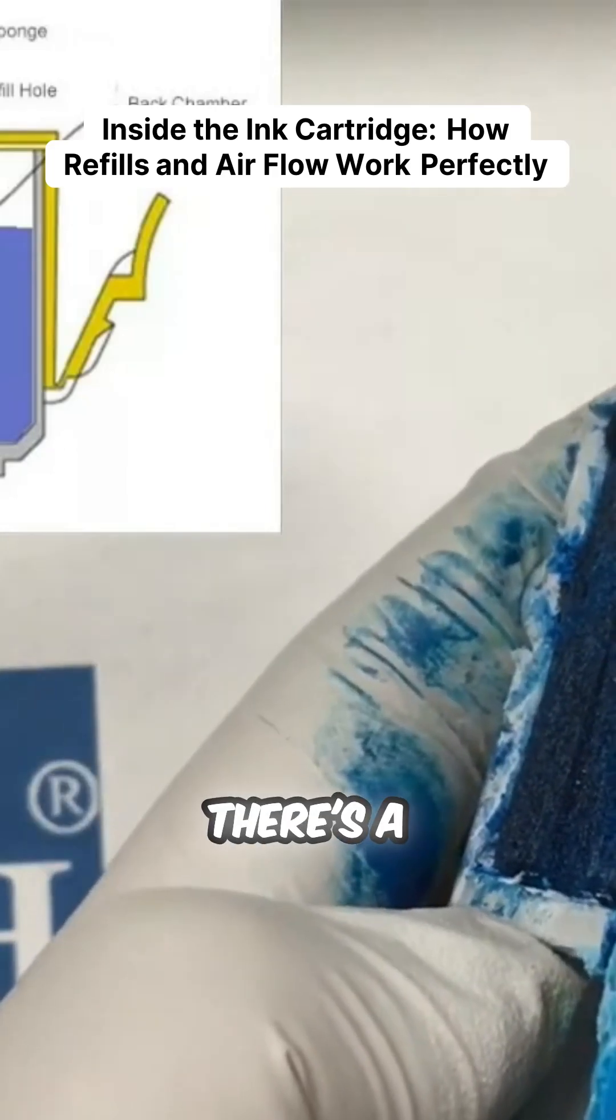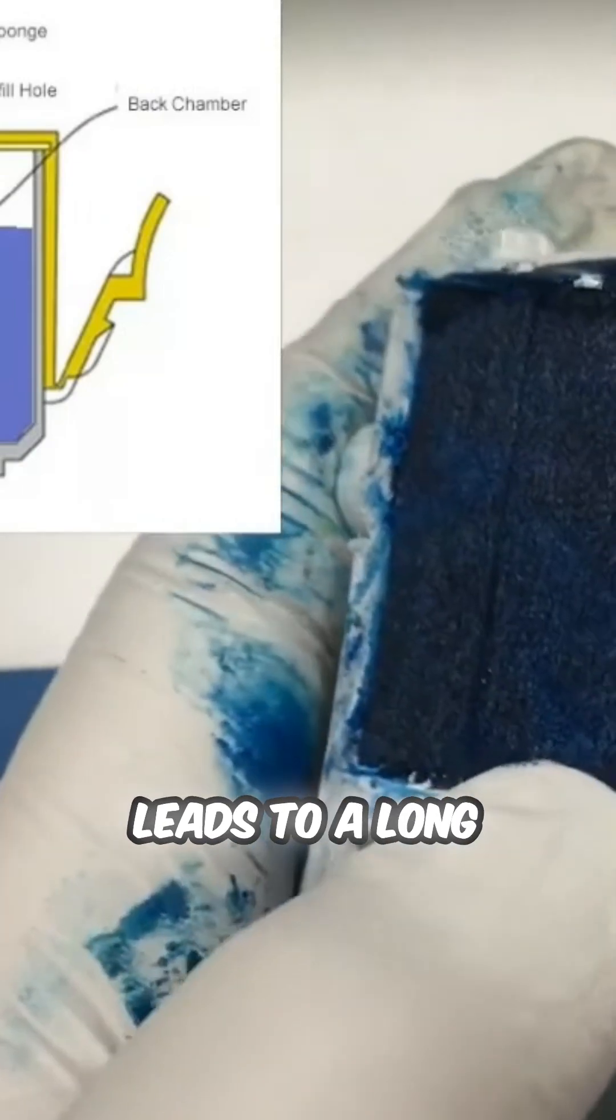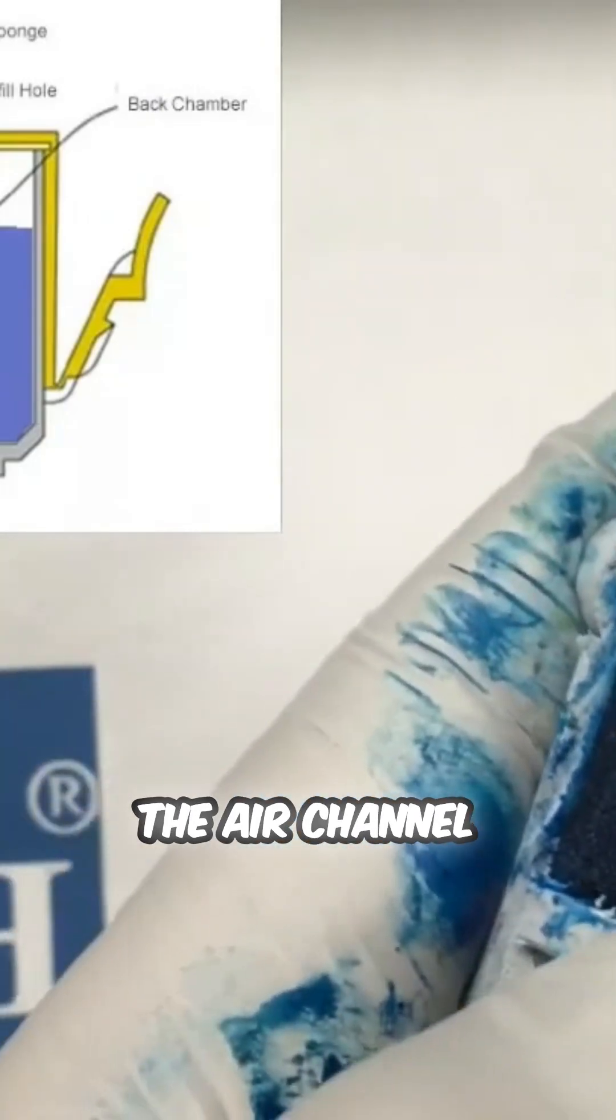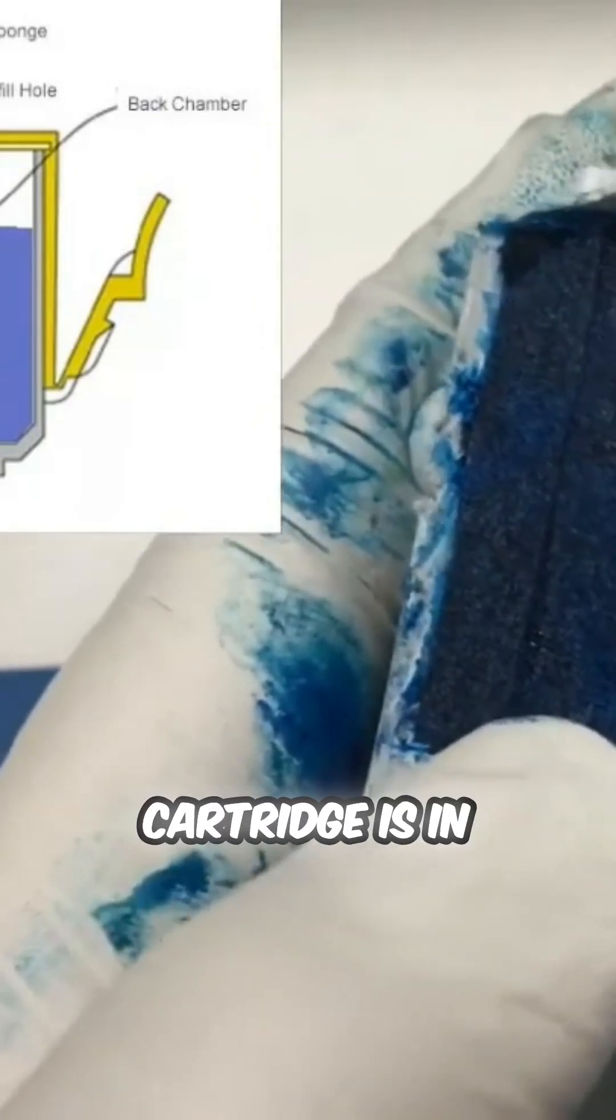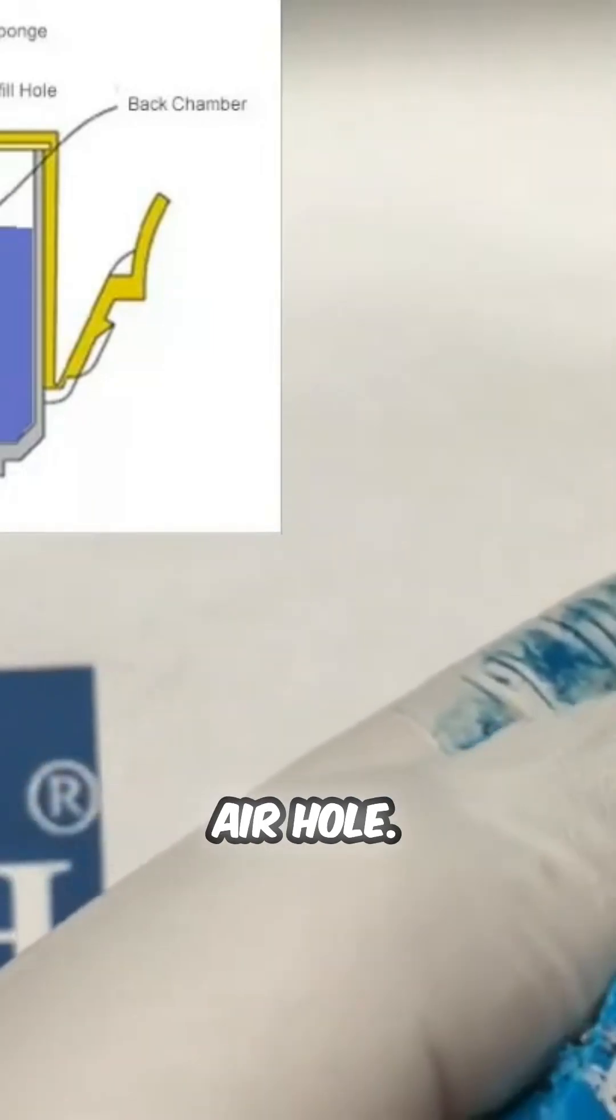On the top, there's a T-shaped air intake, which leads to a long air channel. The air channel connects to an air hole. When a cartridge is in use, the cartridge sucks air into it from the air hole.